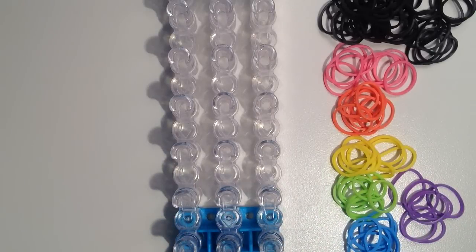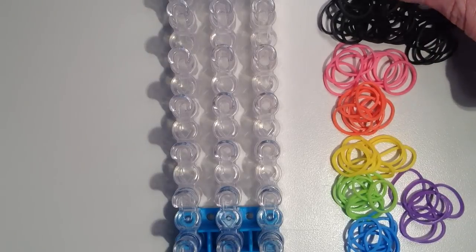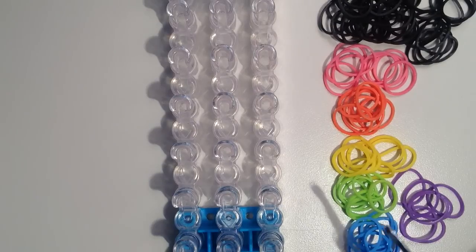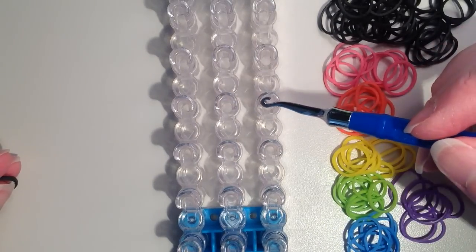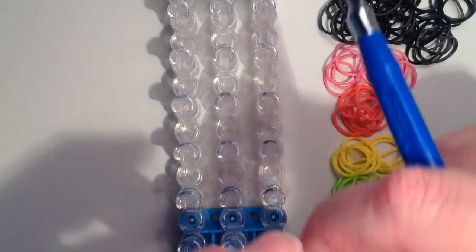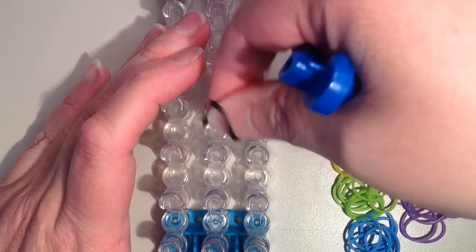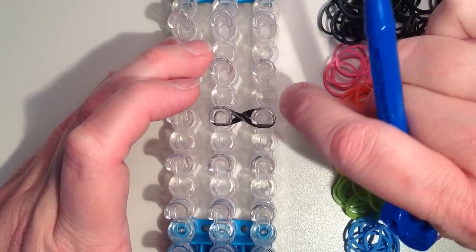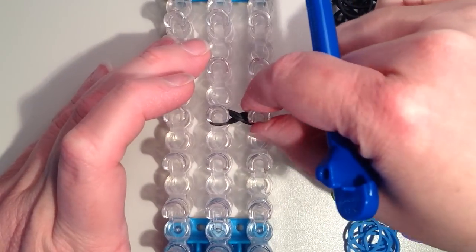Throughout this bracelet we are going to be using double bands, which means we're going to be putting on two at once. I'm going to start with my black, I'm going to take two and go from one of these pins in the center row and go over to the right. So I'm just placing them on, and I do want to twist to make a figure 8, just for the very bottom.